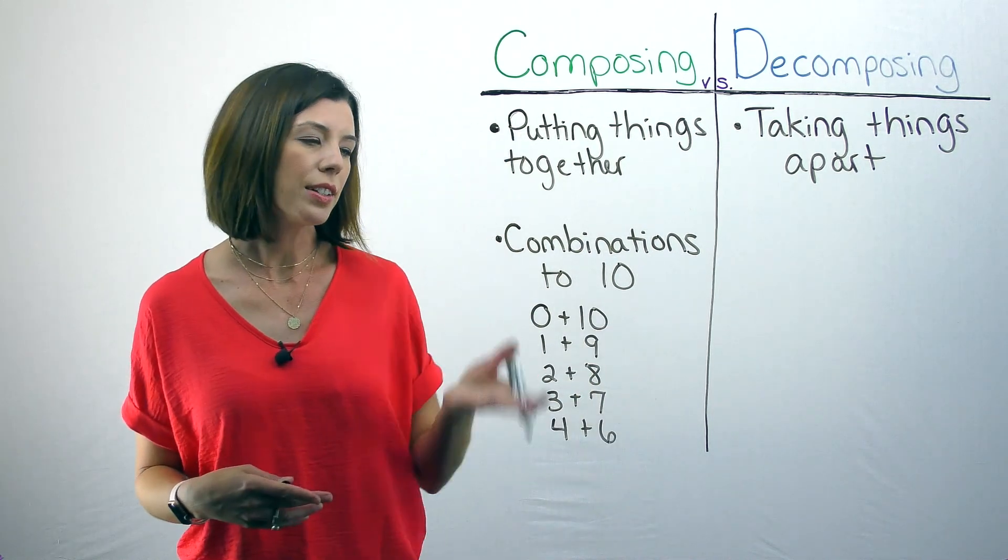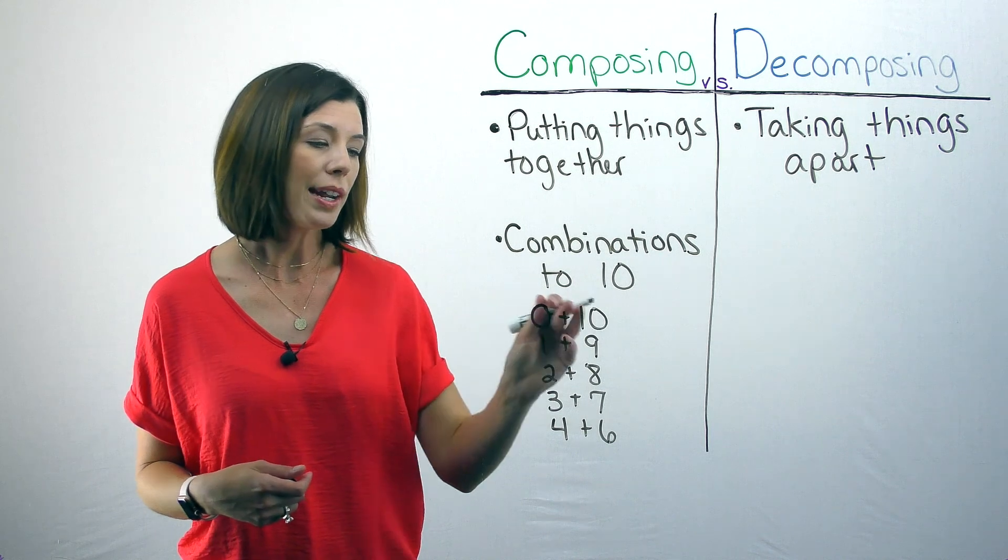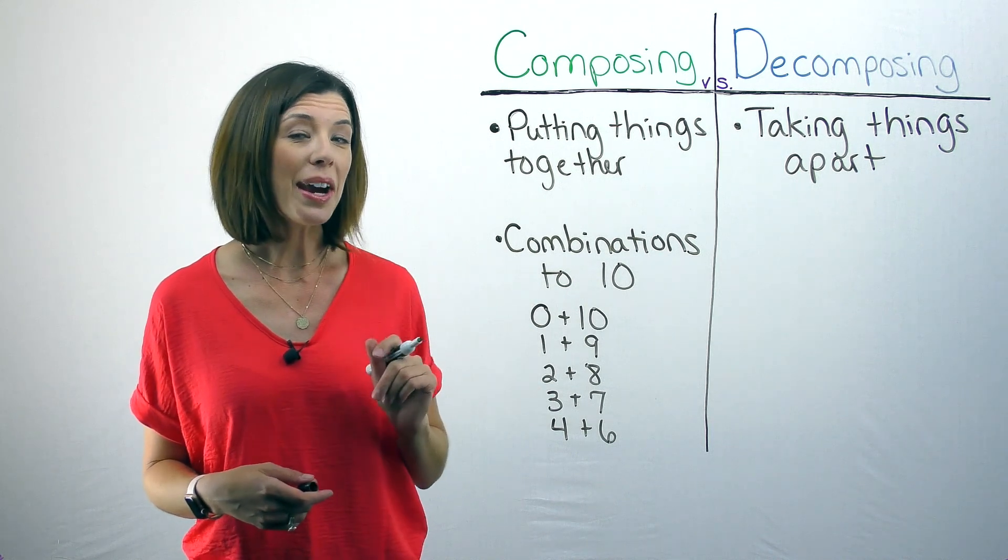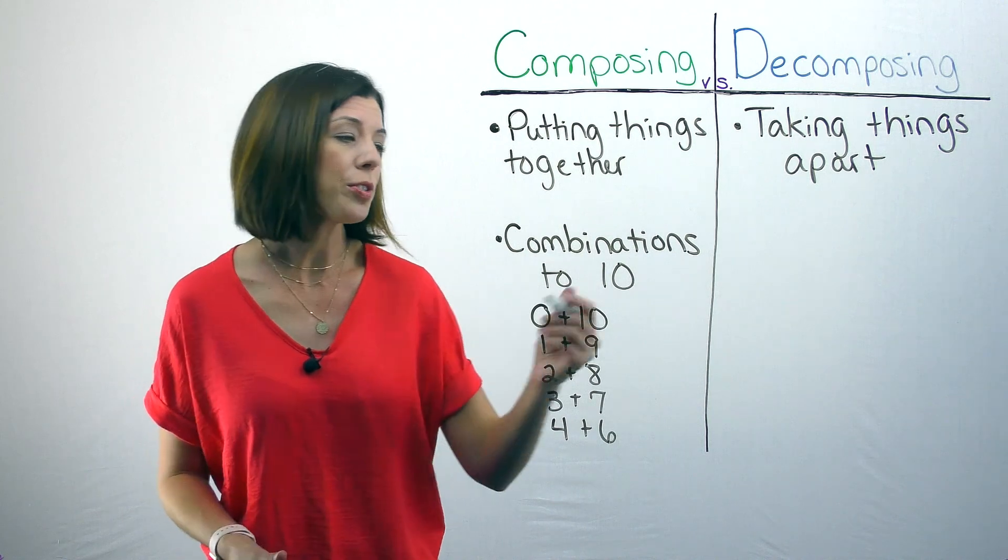You might have a list that looks something like this. Zero and ten, one and nine, two and eight, three and seven, and four and six. If this is all you have though, you're missing some, don't forget we can go the other direction.